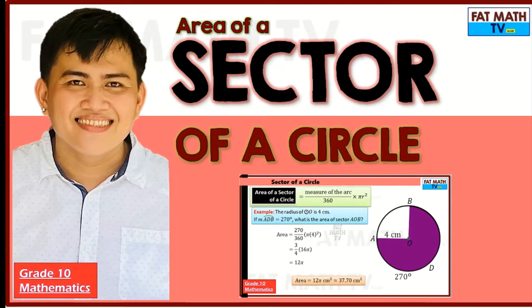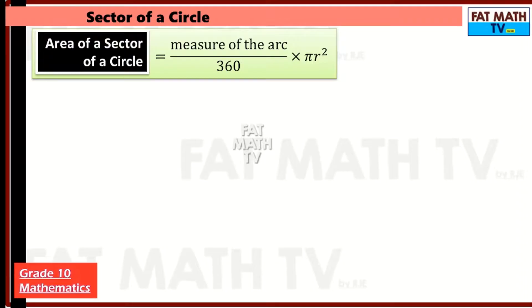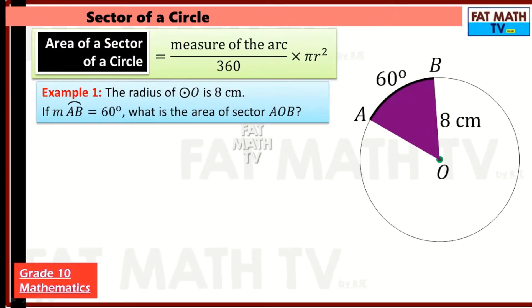In this video we will cover the area of a sector of a circle. The area of a sector equals the measure of the arc over 360 times pi r squared. You just need to identify the measure of the arc, divide it by 360, and then multiply by the area of the circle that contains the sector. For example, the radius of circle O is 8 centimeters, and the measure of arc AB is 60 degrees. What is the area of sector AOB — the shaded part shown here?